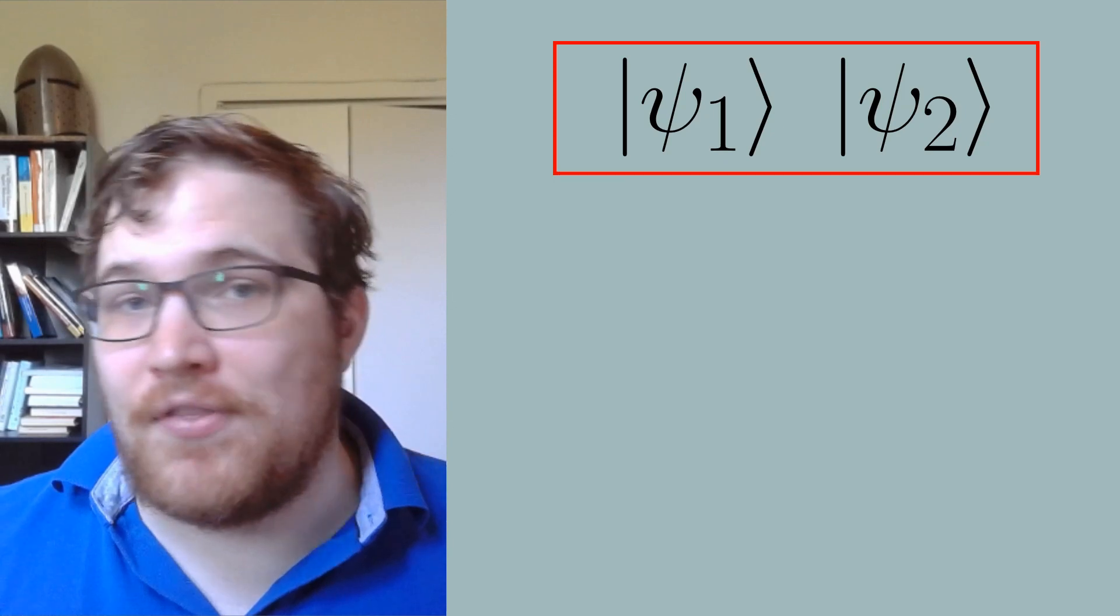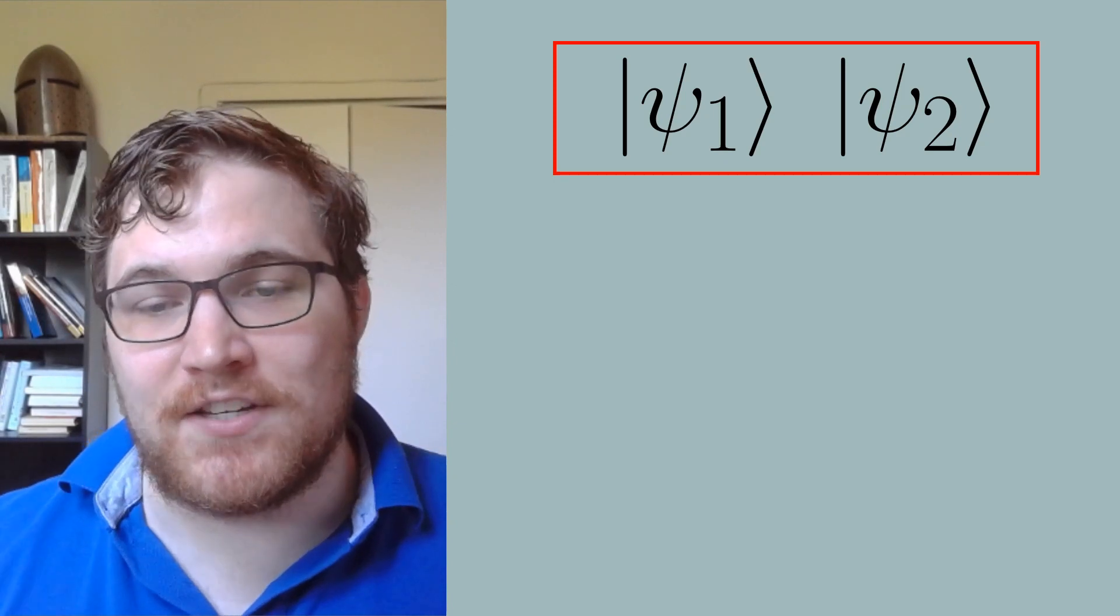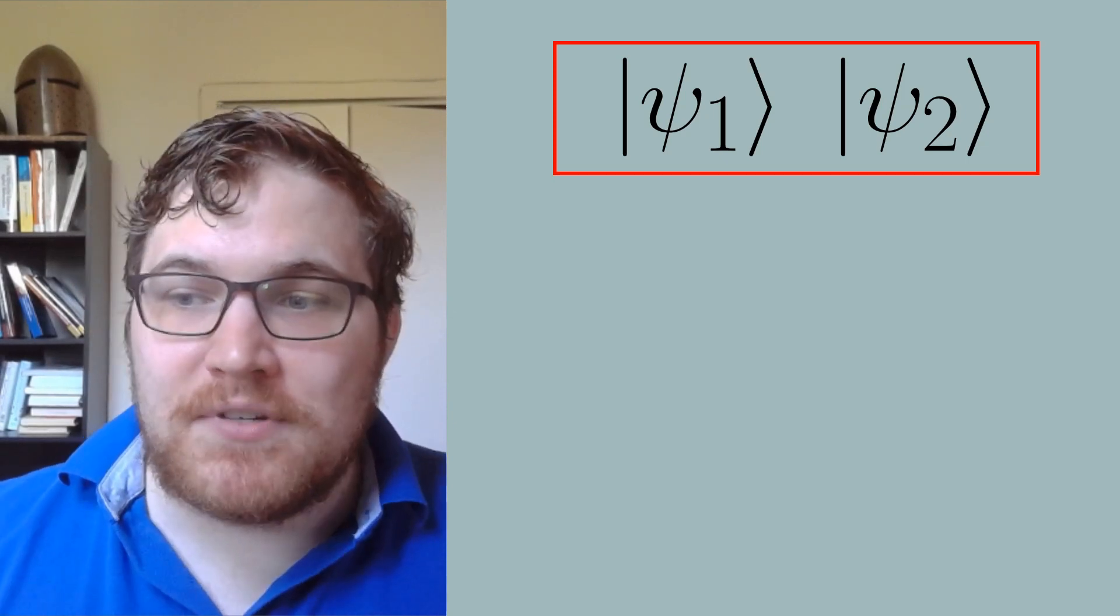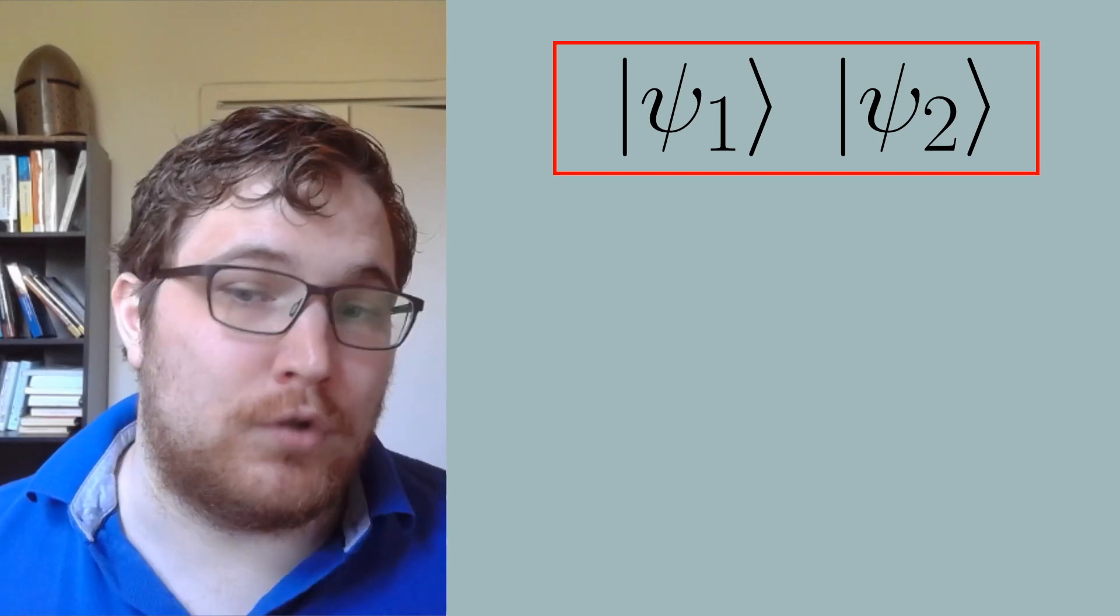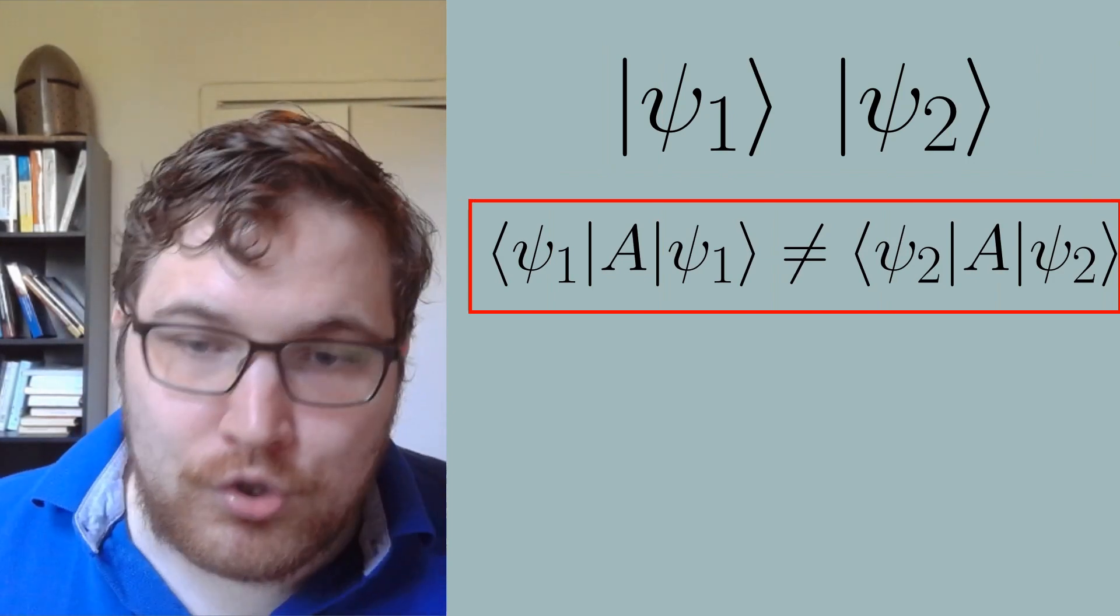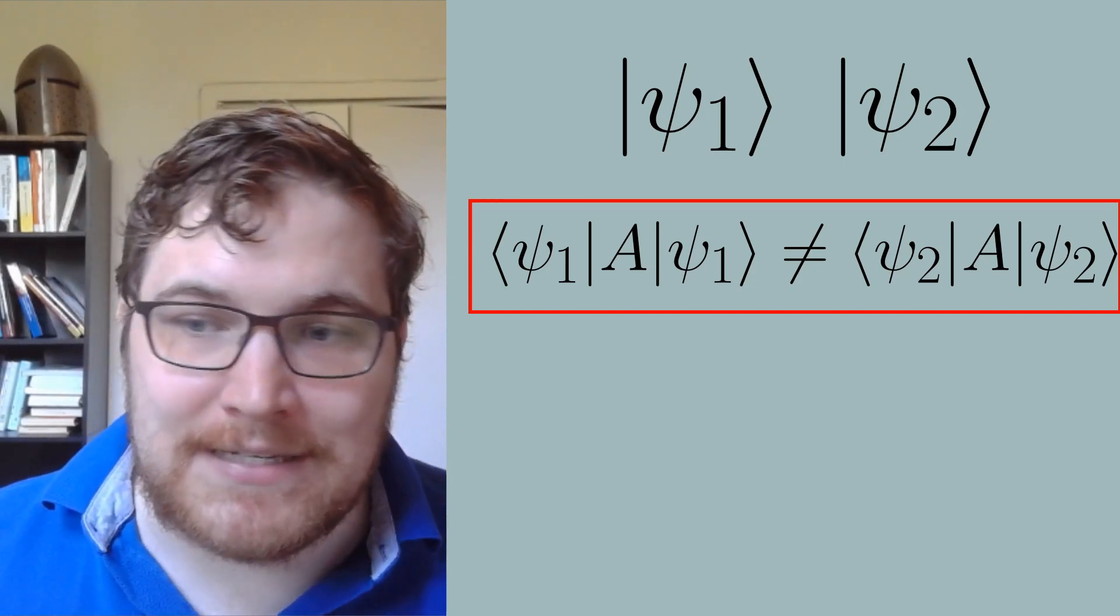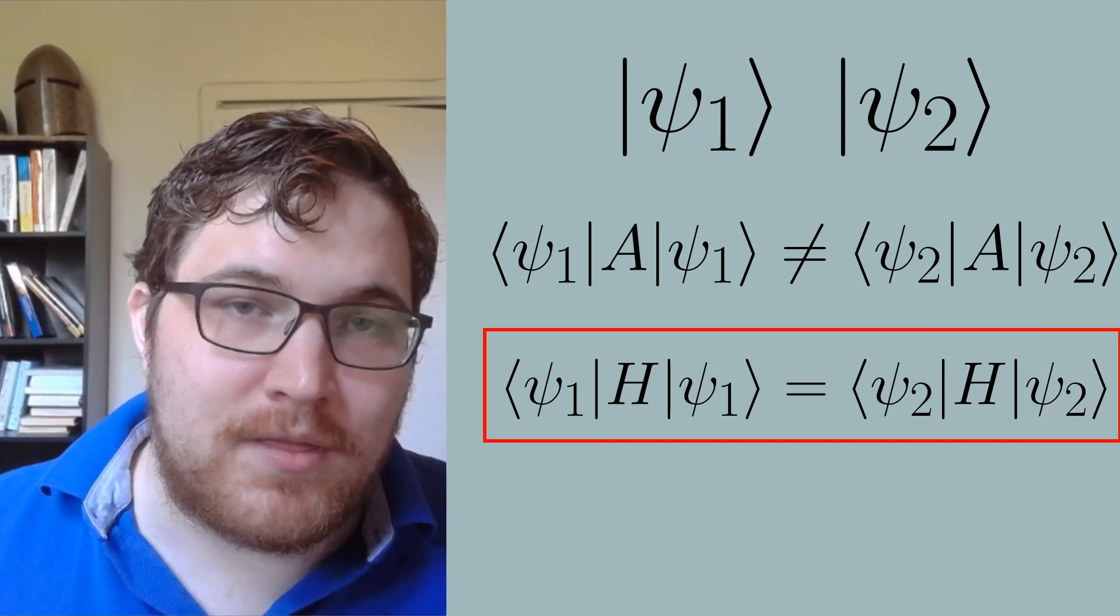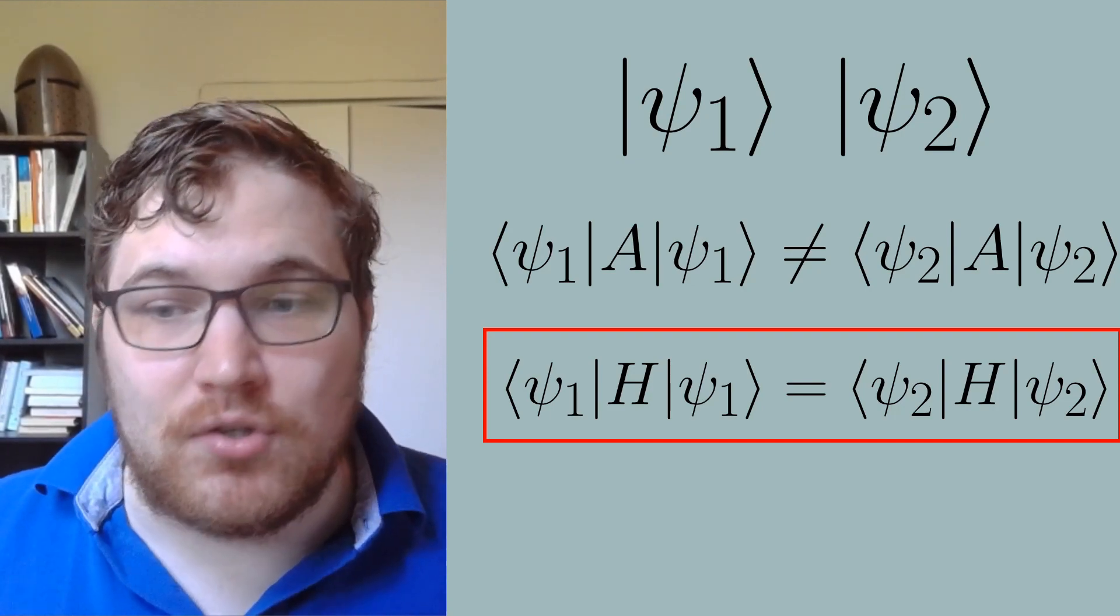They are not equal and they have distinctive initial conditions. For simplicity, let's say that they disagree specifically on the initial conditions of a single observable, perhaps a single spin operator somewhere on the lattice or perhaps some other form of local operator. Let's call this observable A. Now let's also choose these states such that they have identical energy, that is they have identical expectation values of the Hamiltonian.